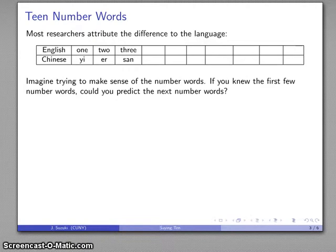So in English, I have 1, 2, 3 as my first number words. And in Chinese, I have yi, er, san. And on the basis of knowing that the first three words are yi, er, san, can you predict what the next number word is going to be? Probably not.